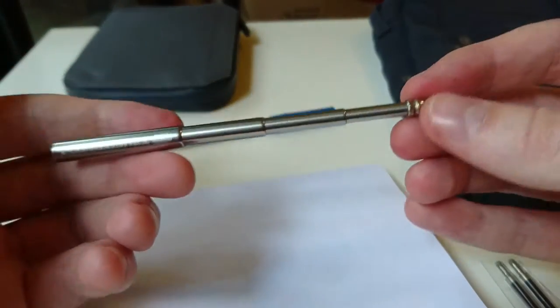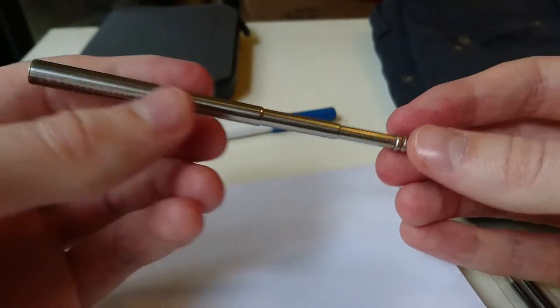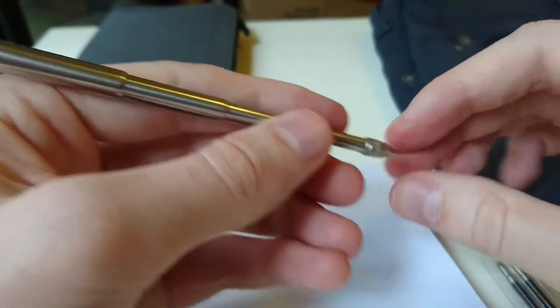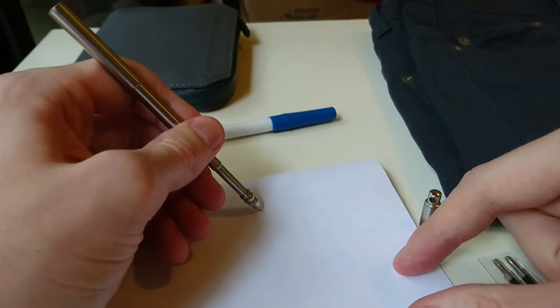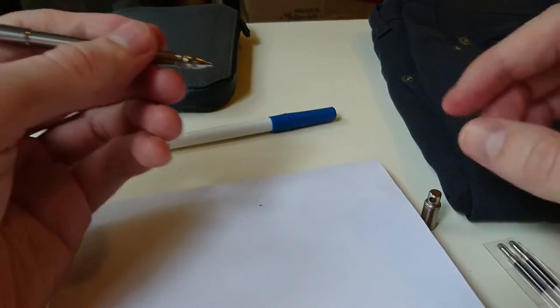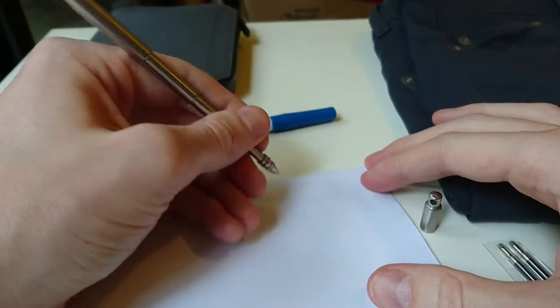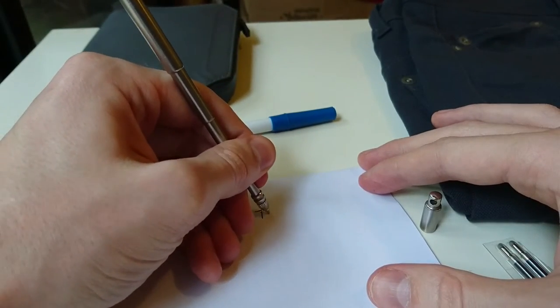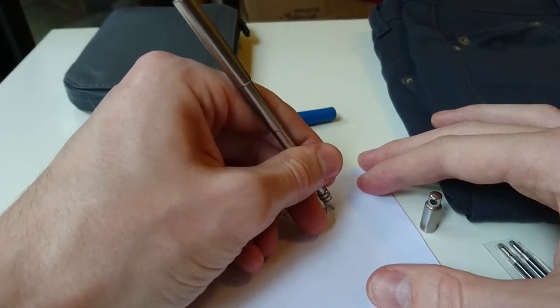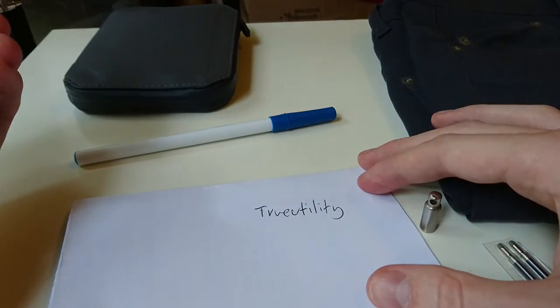So some of the bad points about this pen is because it is telescopic, you need to put your grip fully on the end of the pen. Otherwise when you're writing it can actually start to close up on you. So just put your pressure on the end of the pen when you write and it writes quite nicely.